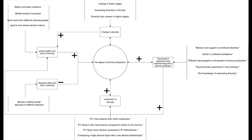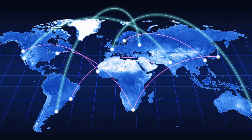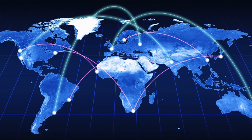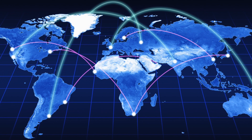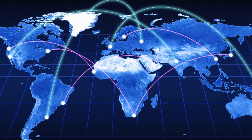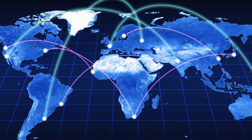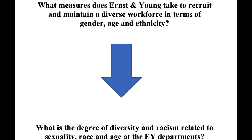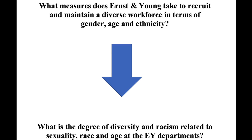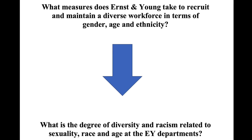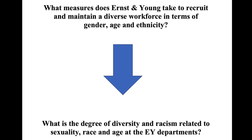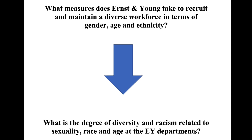These relationships can of course change from positive to negative if more interviews are added to our research. We found out that there is a big positive change of diversity at EY, mainly due to the globalization of the countries where the EY departments are located. After all information gathered, we are reflecting on our research question. We could change the research question into: what is the degree of diversity and racism related to sexuality, race, and age at the EY departments?